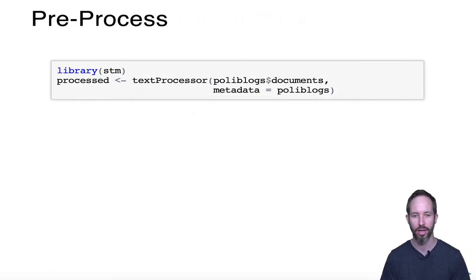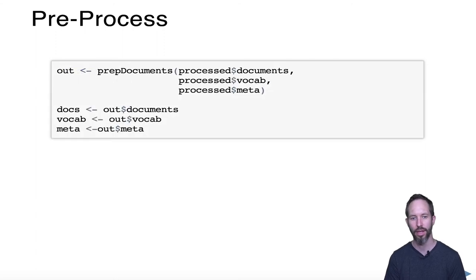Basically what we did in a previous video on basic text analysis when we did things like stemming and removing numbers and punctuation, we can do all of that in one nifty step with STM using the text processor function like we are here. We have to specify where the metadata are if they're not in the same dataset as the documents. For us here, they are. We have a single dataset that includes both the documents and the metadata, so we can just specify it as follows.